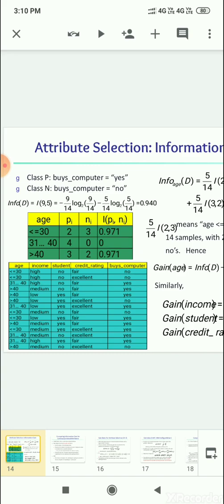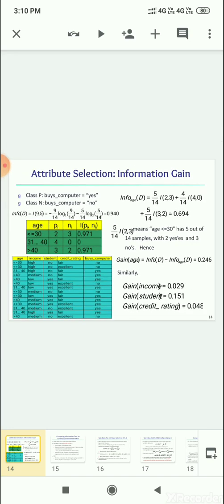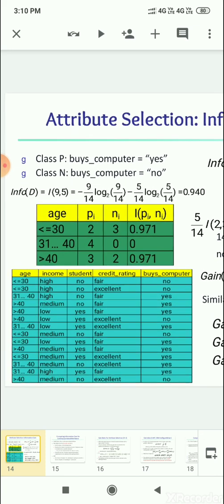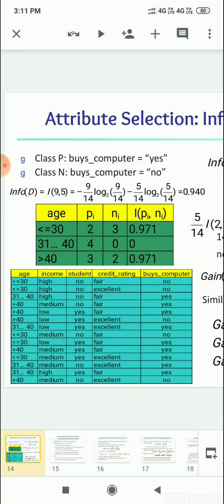Then we have to find the gain ratio. How we are finding the gain ratio, that also I will explain here. Let us see that buys computer. Class P denotes buys computer equals yes, and class N, buys computer equals no. First we have to find the total entropy. Buys computer, how many yes is there? You can see there is 9 yes, and how many no is there? That is 5.